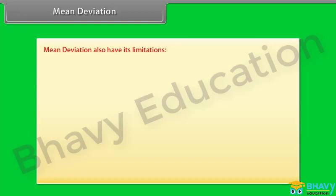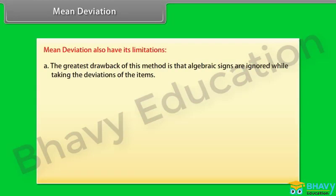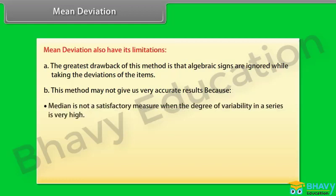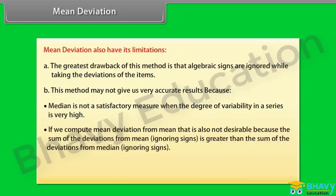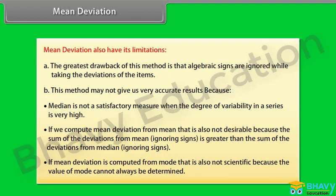Mean deviation also has its limitations. The greatest drawback is that algebraic signs are ignored while taking the deviations. This method may not give accurate results because the median is not satisfactory when the degree of variability is very high. Mean deviation from the mean is also not desirable because the sum of deviations from the mean ignoring signs is greater than from the median. If computed from mode, it is not scientific because mode cannot always be determined.